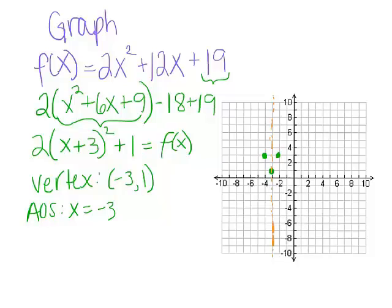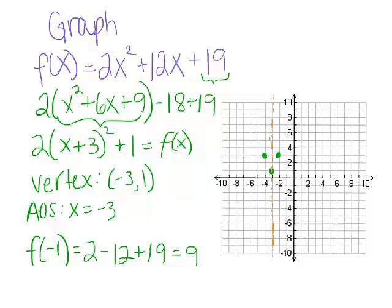How do we get more points? The next good number to plug in — we like 0, but plugging in 0 gives us 19, which is our y-intercept and that's off the charts. Maybe negative 1 would be helpful. Plugging in negative 1: 2 times negative 1 squared is 2, plus 12 times negative 1 is minus 12, plus 19 — that gives us positive 9. So we have the point negative 1 comma 9.